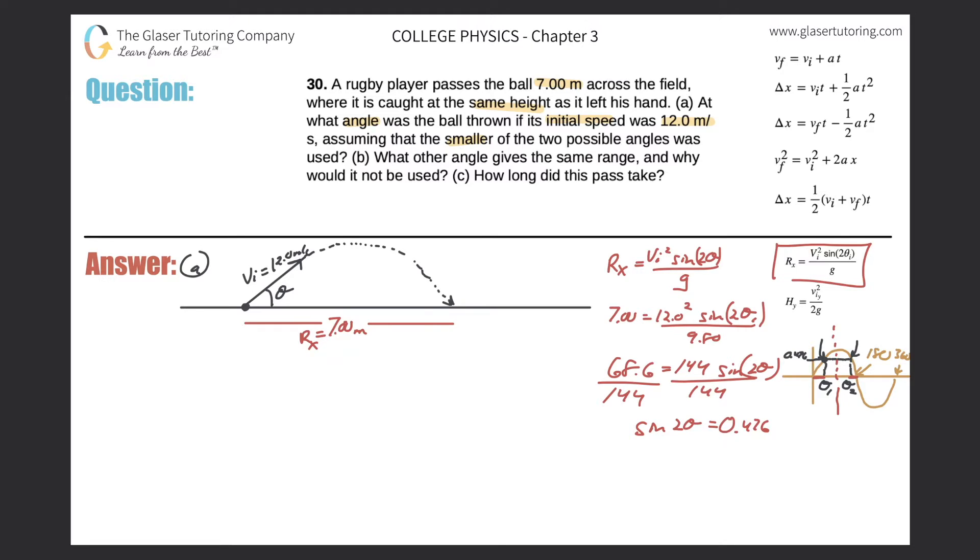Once I do the inverse sine, I'm finding θ₁ and θ₂. In your calculator, do second sine of 0.476, and that value comes out to be 28.4. So now we have 2θ equals 28.4. This obviously isn't the θ value yet, it's 2θ. But once we do the inverse sine, we find this distance I described before.